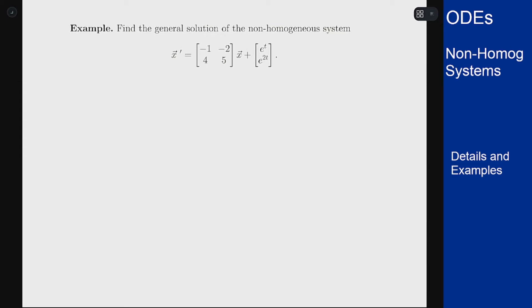In this video we're going to solve the same example we did before but now with the two other methods: undetermined coefficients and variation of parameters. For both these methods we again need the eigenvalues and eigenvectors of this problem. This process is the same no matter which method you're using — you always need that as a starting point. So we'll start by finding those first.